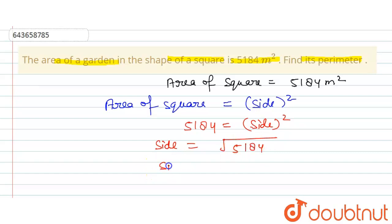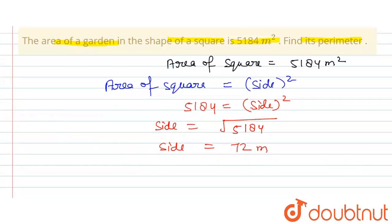And this is the square root of 72, so 72 meter is the side of a square. And also we know that perimeter of square...